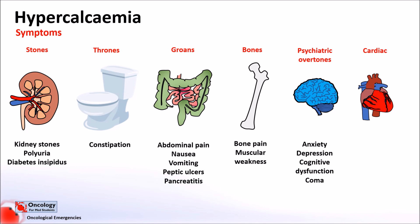Not mentioned in the mnemonic but important nonetheless are the cardiac effects, which include bradycardia, hypertension, and a shortened QT interval. AV nodal block has also been known to occur, and in rare cases it can lead to heart block and cardiac arrest. At levels of less than 2.8 mmol per litre, symptoms are only likely to include polyuria, thirst, depression and mild cognitive impairment. Above this, but below 3.5, you might see muscle weakness, fatigue and nausea. Only really above 3.5 will you see the most serious effects: abdominal pain, vomiting, lethargy, coma, pancreatitis and arrhythmias. Kidney stone formation is only really seen if high calcium levels are long-standing.